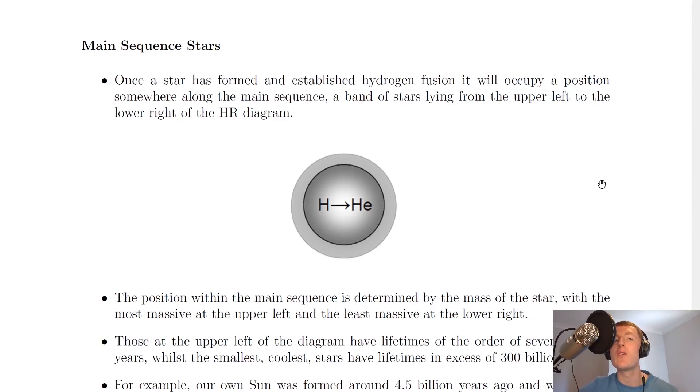We're now going to look at the stages involved in the evolution of a star, which begins with the main sequence stars. Once a star is formed and established hydrogen fusion, it will occupy a position somewhere along the main sequence, which is a band of stars lying from the upper left to the lower right of the HR diagram.